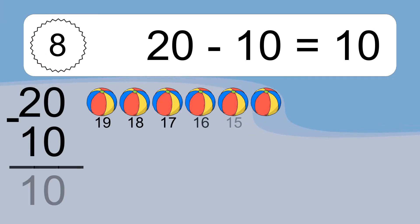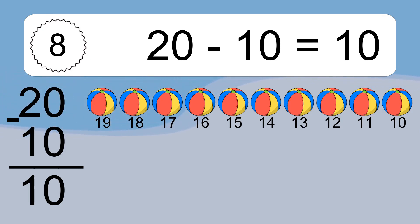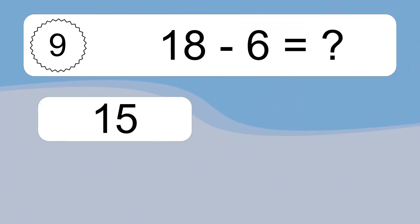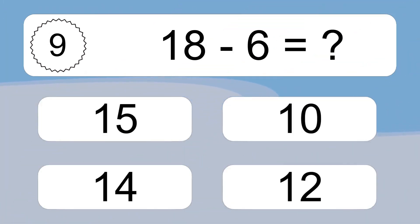20 minus 10 equals what? 20 minus 10 equals 10. Let's count it: 19, 18, 17, 16, 15, 14, 13, 12, 11, 10.